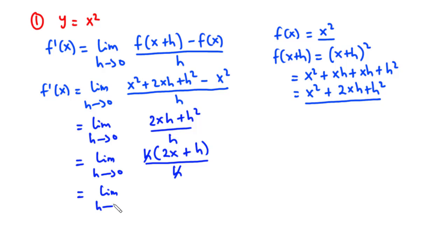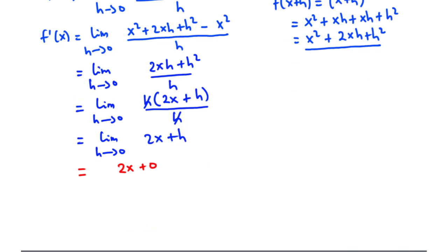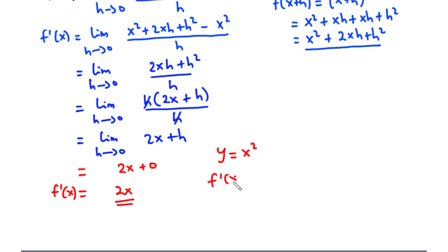We substitute h equals zero, giving 2x plus zero, so f prime of x equals 2x. For y equals x squared, the first derivative is 2x.